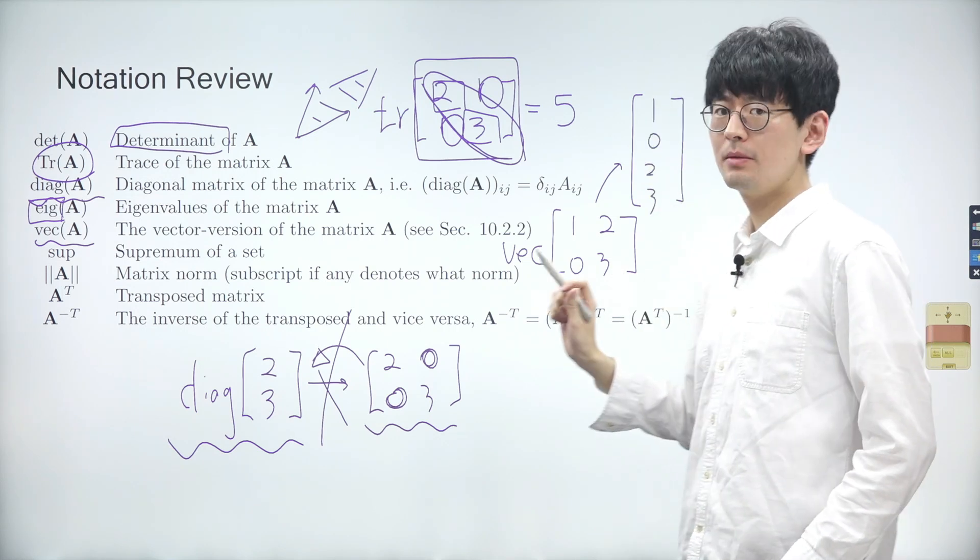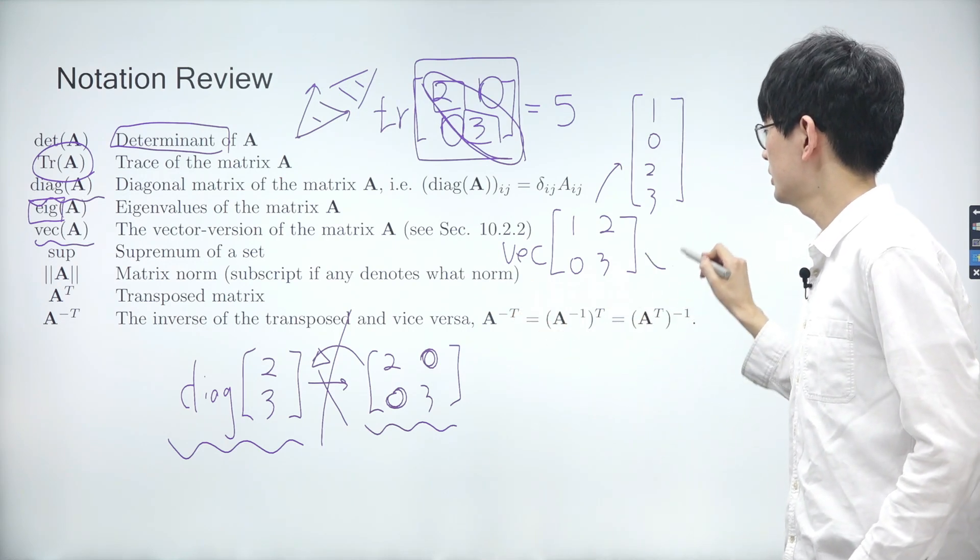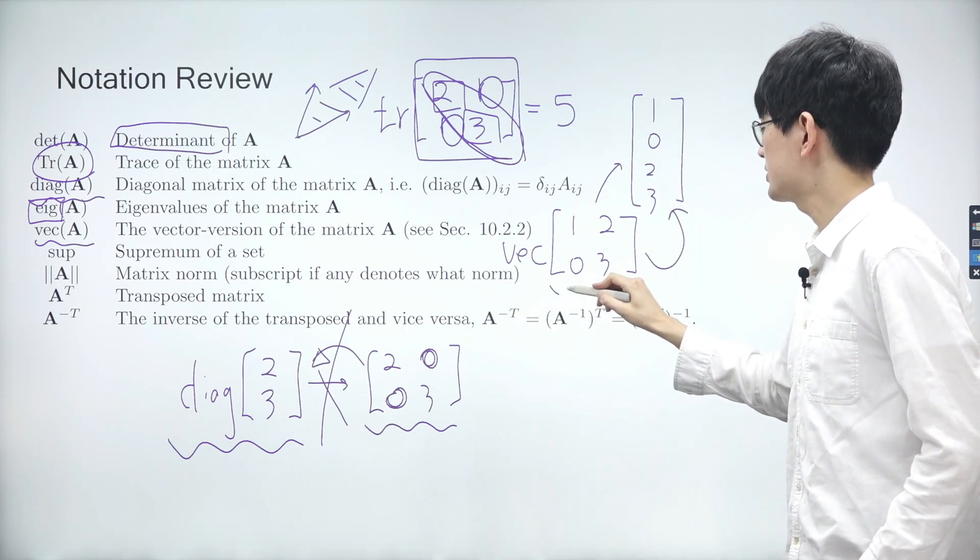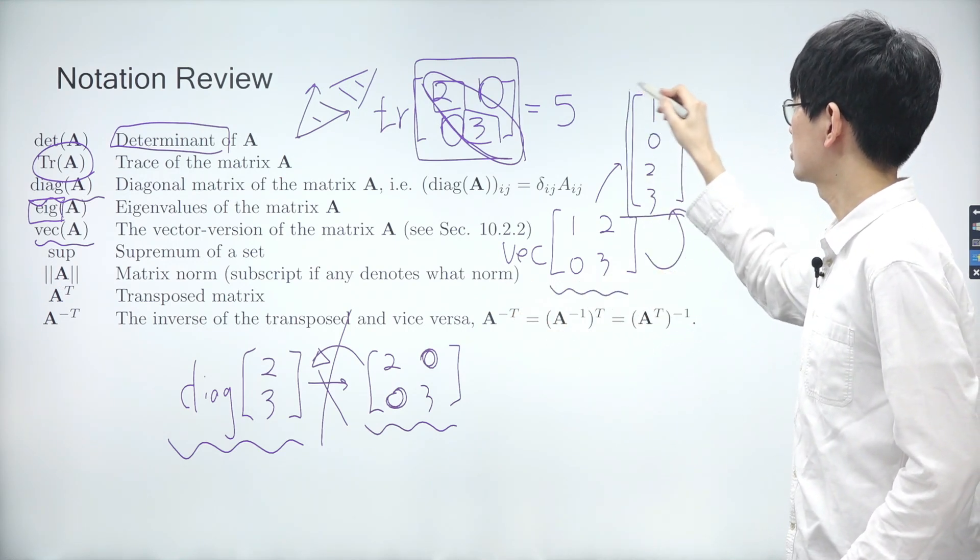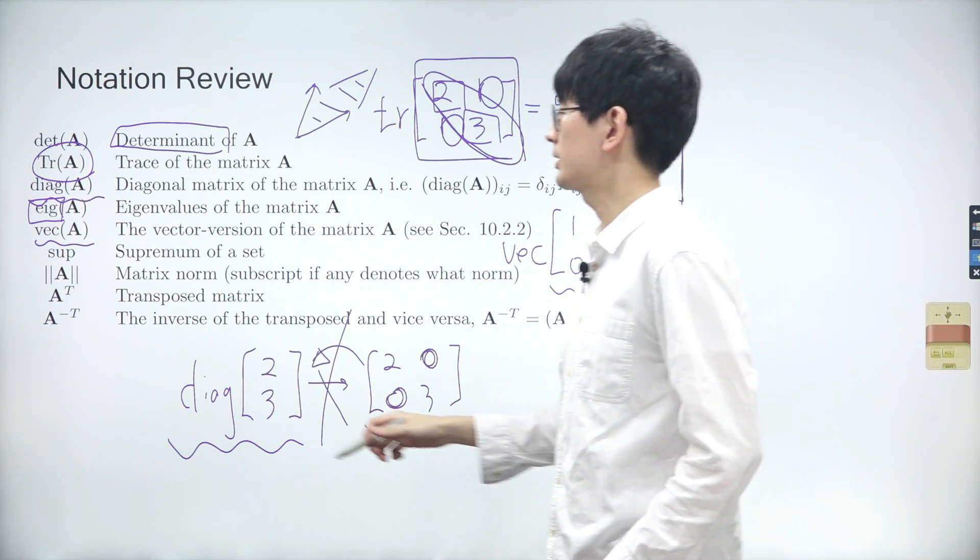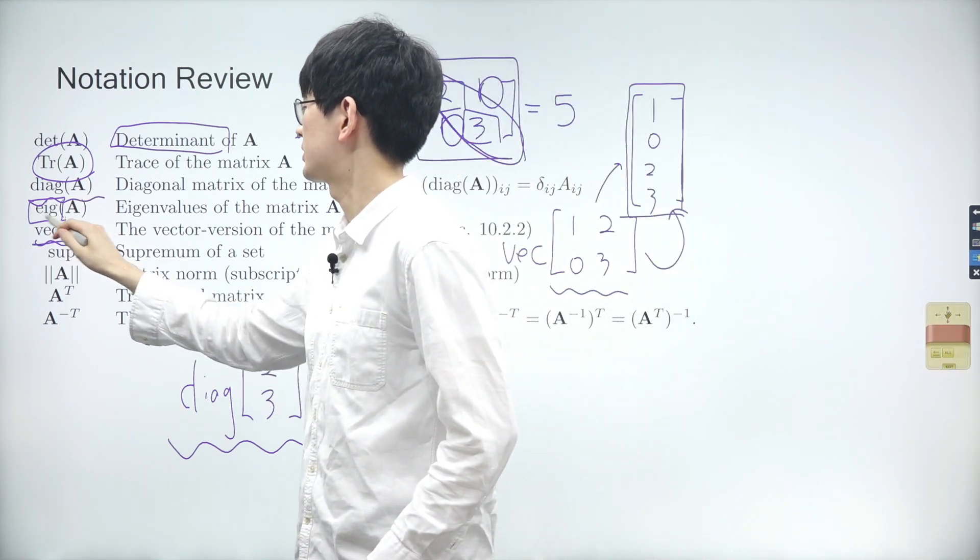In other words, through the process of vectorization, we reduce the dimensionality of a matrix to 1. The vectorized matrix is represented by the three letters V, E, and C.